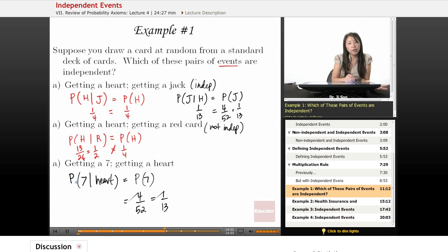But what about probability of getting a seven given that it's a heart? If it's a heart card, that's only 13 cards. The probability of getting a seven is one out of 13. Oh, these are equal. So I would say independent. Ta-da.